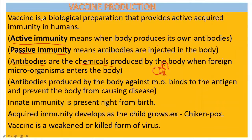Vaccine is a biological preparation that provides active acquired immunity in human beings. Active immunity means the antibodies are produced automatically by the body itself. Passive immunity means when the antibodies are injected into the body. Acquired immunity means the immunity that develops as the child grows.